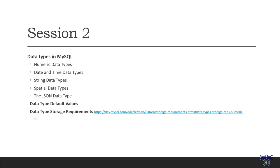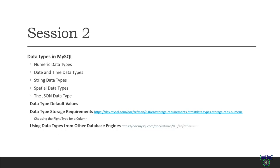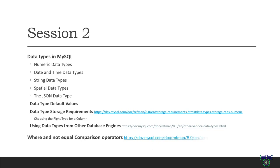Then we will talk about the JSON data type, which is used to store JSON documents in MySQL. We will also cover data type default values, which specify a default value for a column if no value is specified during insertion. We will then discuss data type storage requirements and the where and not-equal comparison operators used to compare values in MySQL.